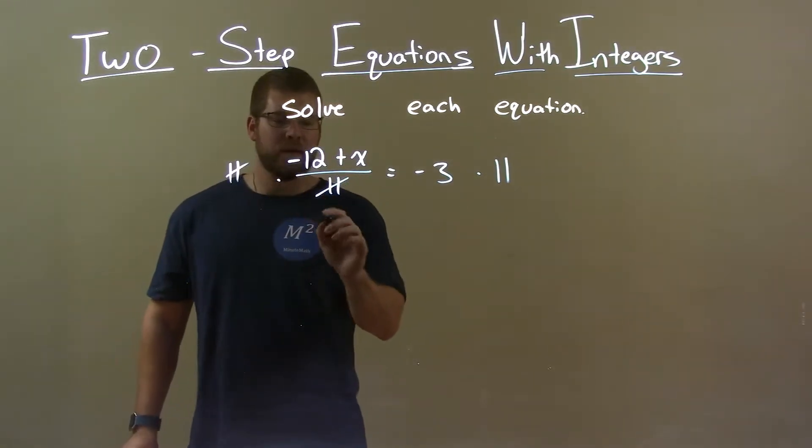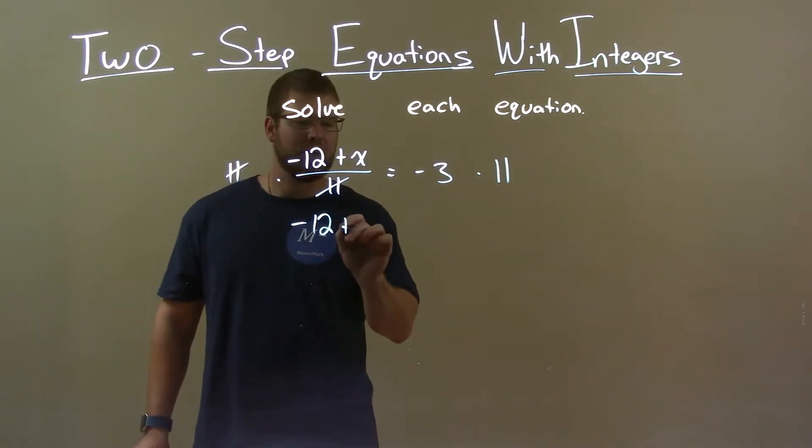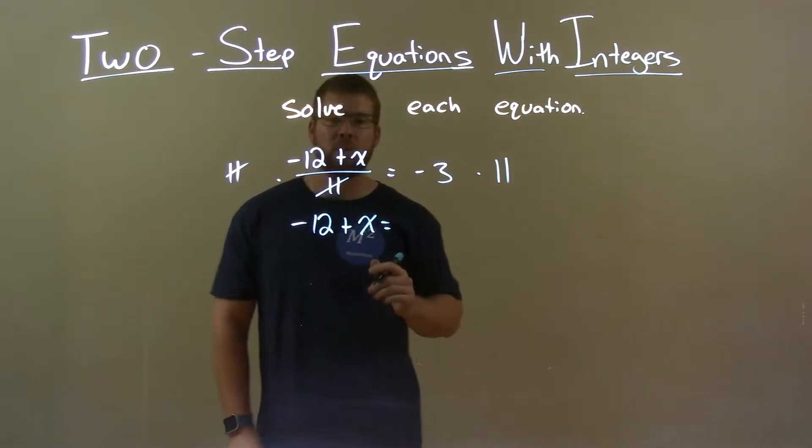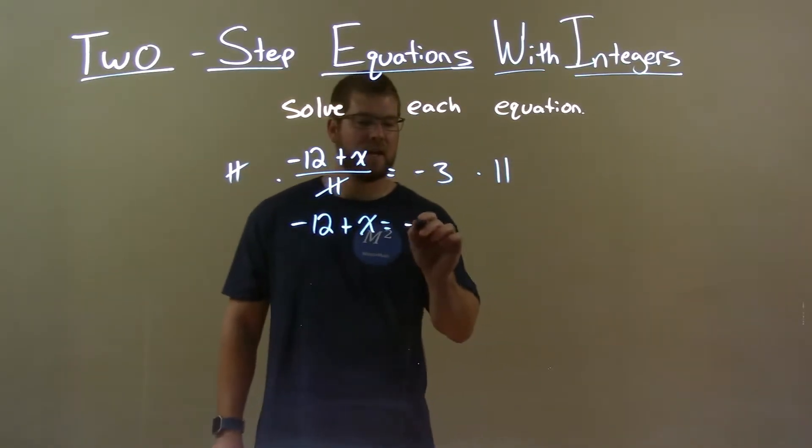The 11's get eliminated, giving me negative 12 plus x on the left. On the right, negative 3 times 11 is negative 33.